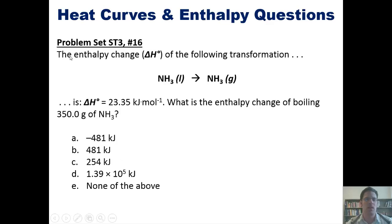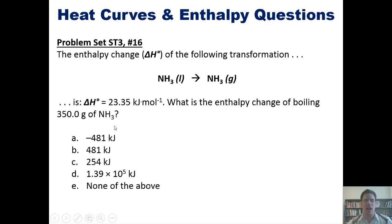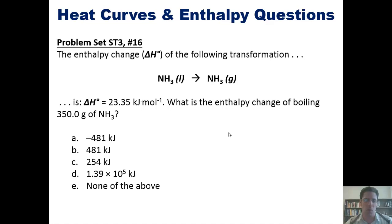Here's another one. The enthalpy change, or delta H naught, for this transformation — converting liquid ammonia to gaseous ammonia — is equal to this number, and it is positive. What is the enthalpy change of boiling 350 grams of NH3? I'm not going to do this here, but I will post a link to a separate video in which I do that. We now move on to another topic: intermolecular forces.